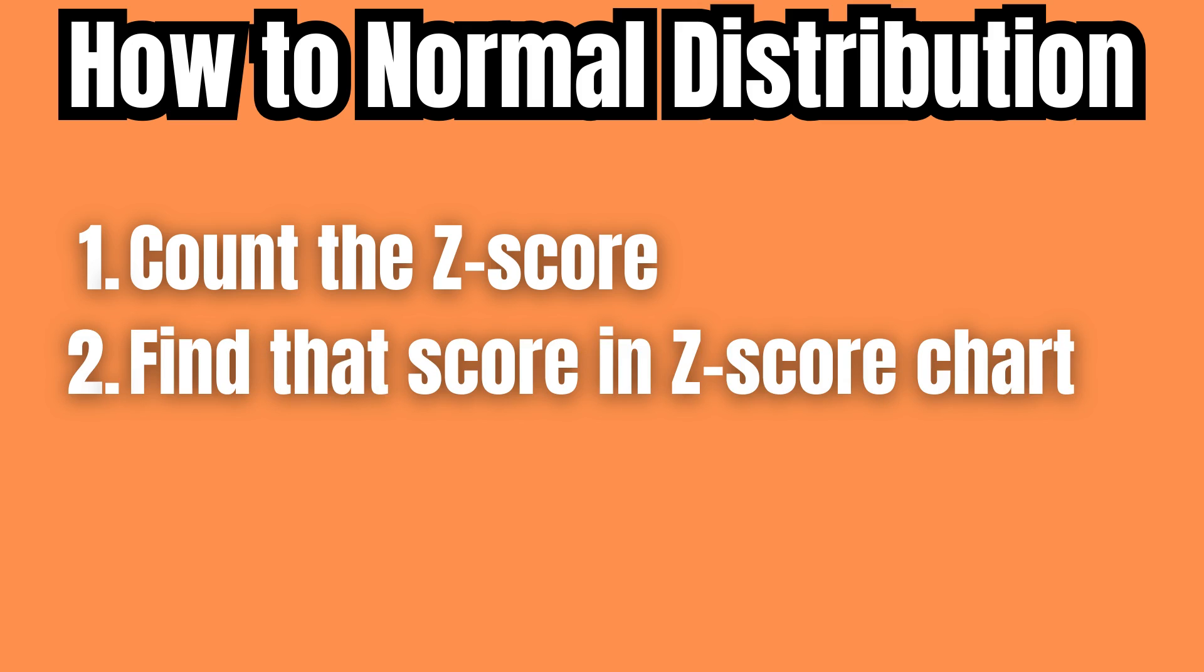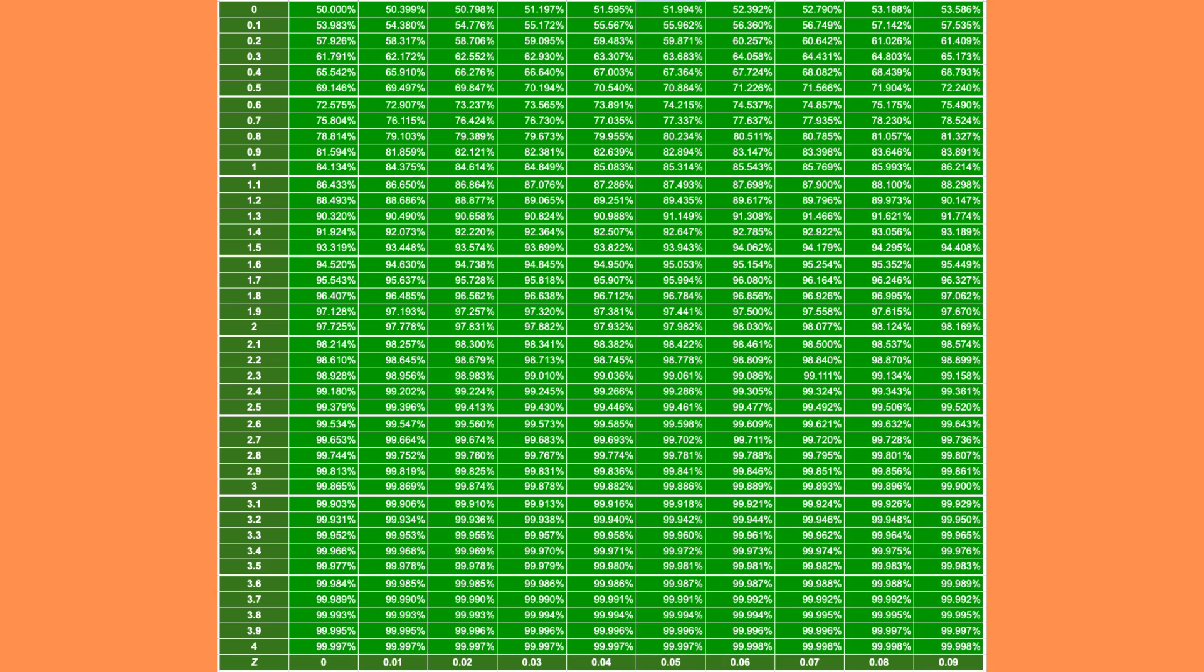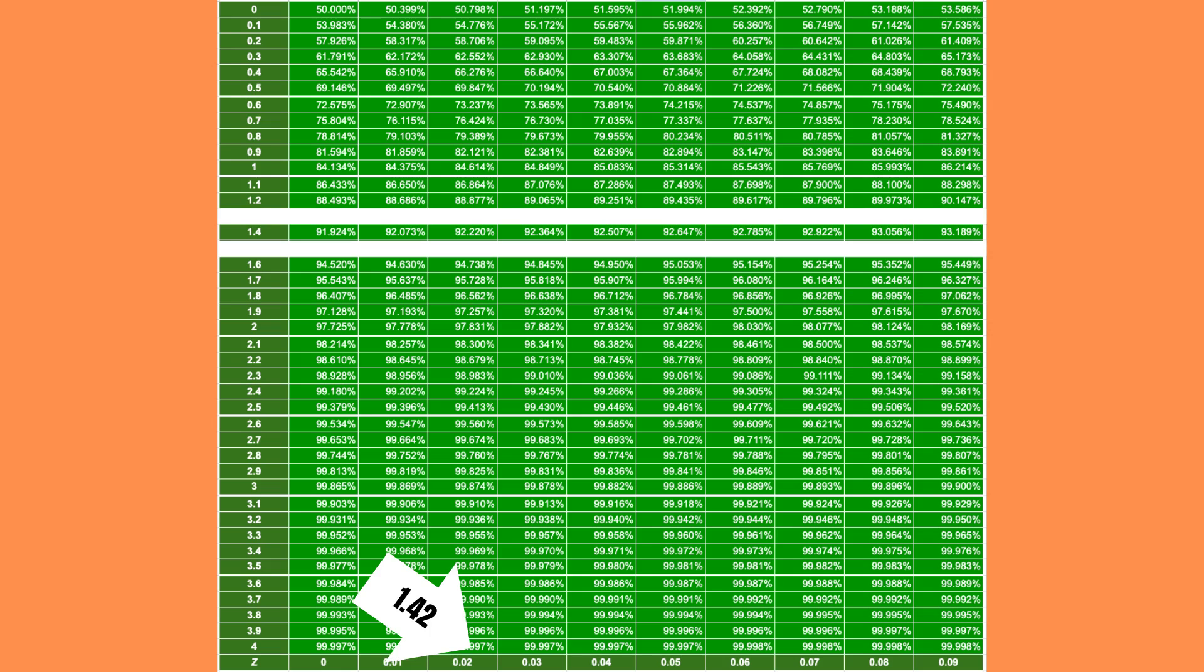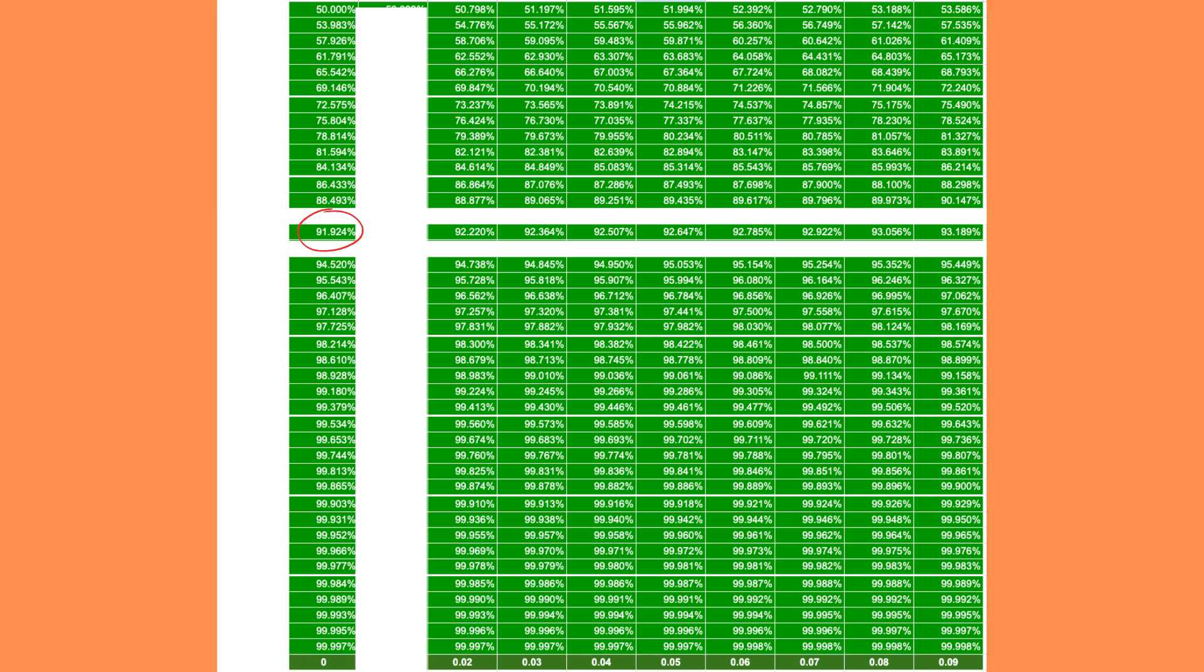Now we look at a z-score table to determine the probability. Since the z-score is positive, we look at the green part of the table. From the green part of the z-score table, we can see that the probability that someone is as tall or shorter than me is 91.924 percent.